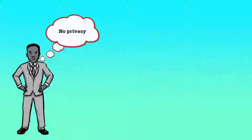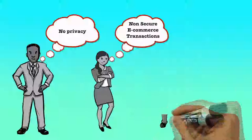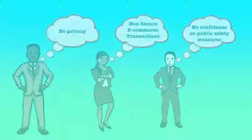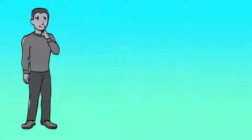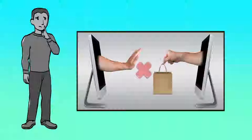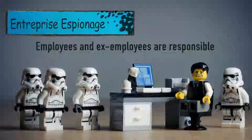Security threats will adversely affect individuals. They lose their privacy and confidence in using the internet for e-commerce transactions. They lose confidence in public safety measures if those measures still do not protect them. If the individual loses confidence, then the business of enterprises involved in e-commerce is also affected. Enterprises lose millions of dollars due to fraud on the internet. Enterprise espionage causes both direct and indirect losses to organizations, and unfortunately many employees and ex-employees are responsible for enterprise espionage.